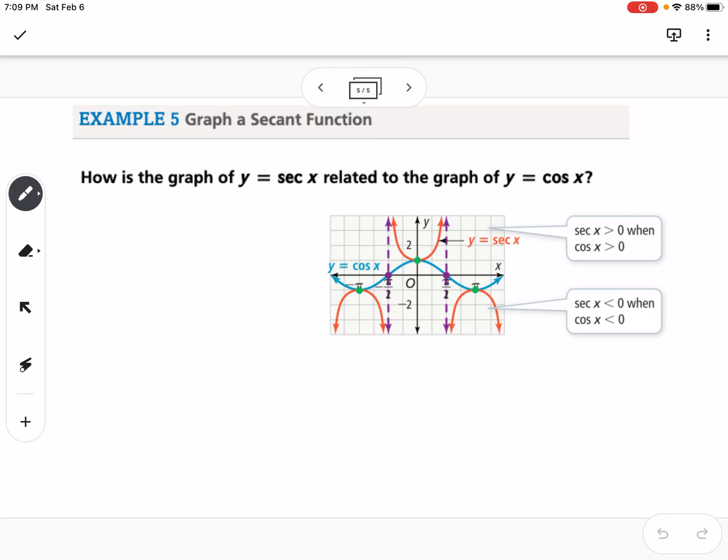So the last example is how is the graph of y equals secant of x related to the graph of cosine? So we know that cosine of x is equal to 1 over secant, or we know that secant is equal to 1 over cosine.